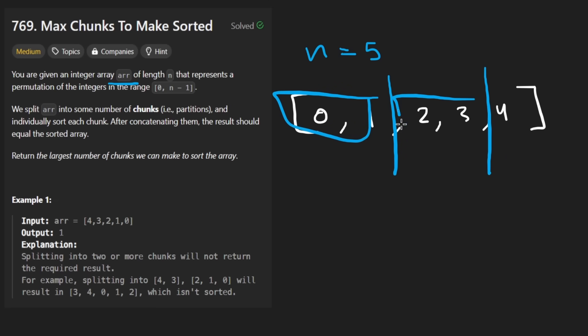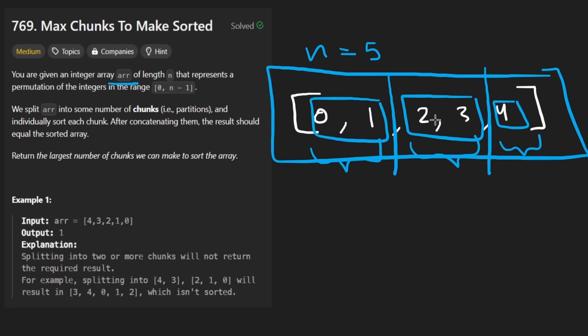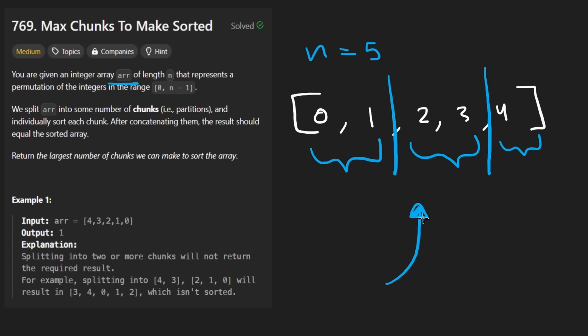Basically we could partition it like this, where we have these values and these values and these values. What we want to do is split this array such that if we take each individual portion and sort this and sort this and sort this, basically piecewise sorting, could we form an entire sorted array? And what is the largest number of chunks or partitions that we could make? That can be kind of confusing. So think about for this example, what would the answer be?